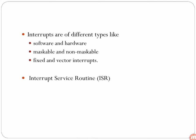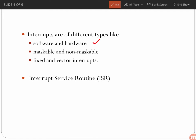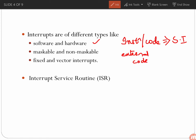Interrupts are of different types. The first is software and hardware interrupts. As the name indicates, when an interrupt is raised by writing an instruction or writing code, it is a software interrupt. When it is raised due to some external signal, it is a hardware interrupt.